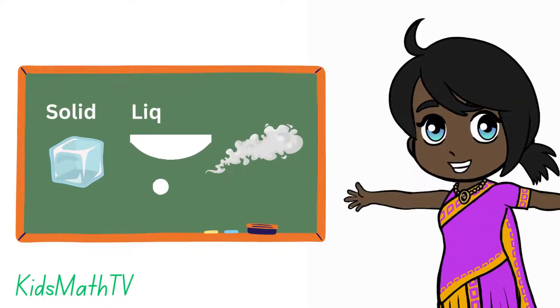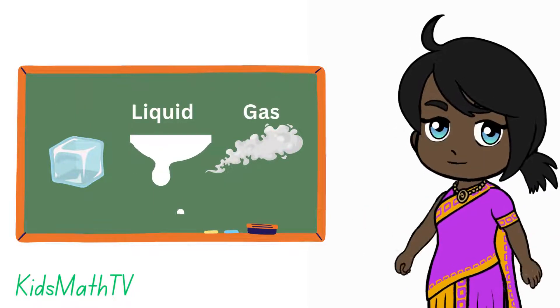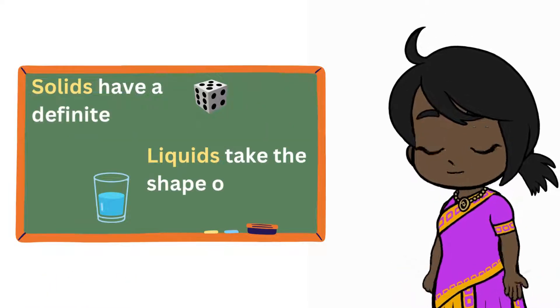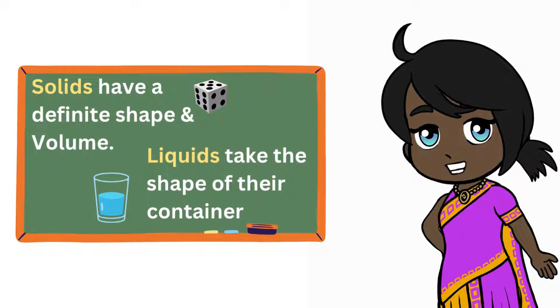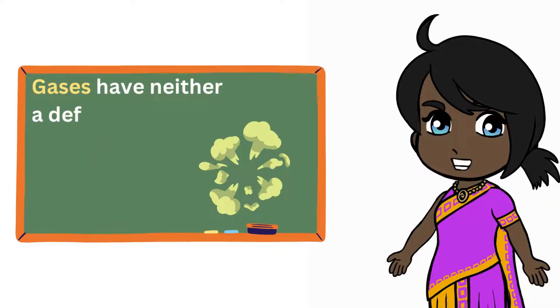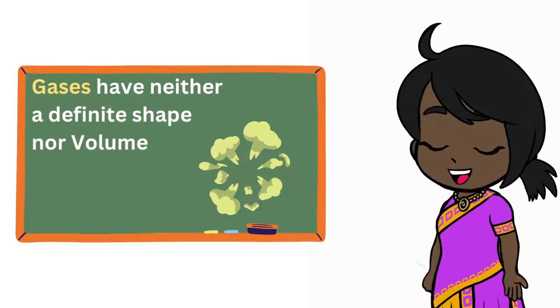Matter can exist in three states: solid, liquid, and gas. Solids have a definite shape and volume, while liquids take the shape of their container and have a definite volume. Gases have neither a definite shape nor volume and can expand to fill their container.